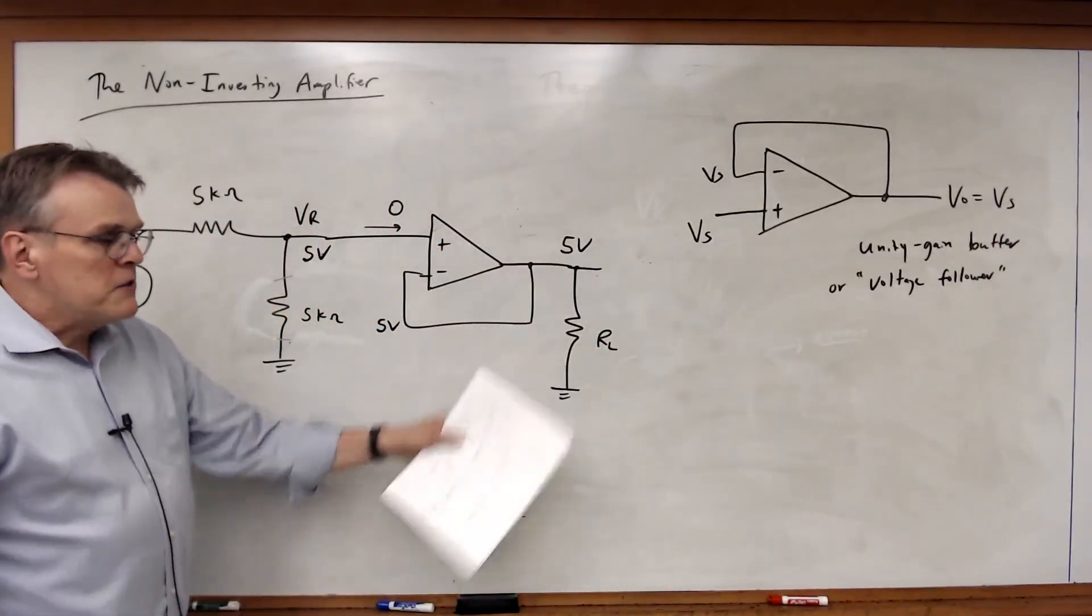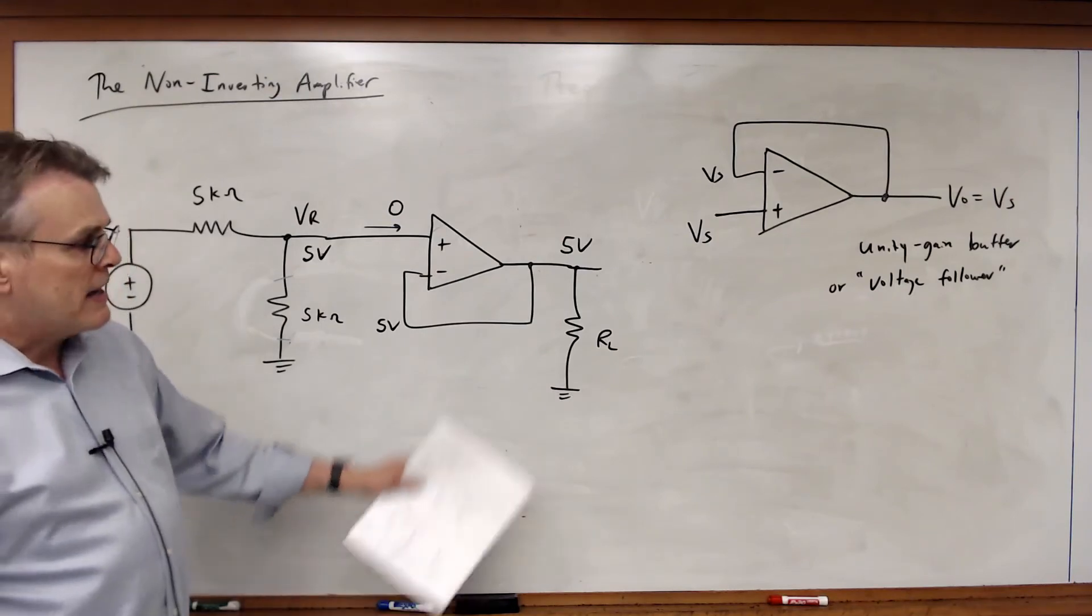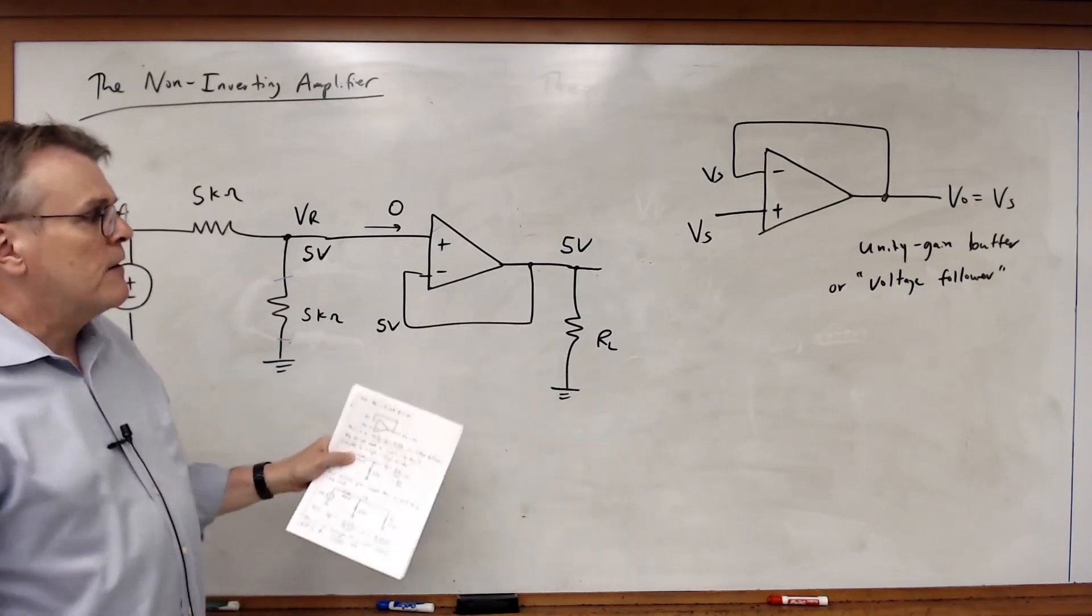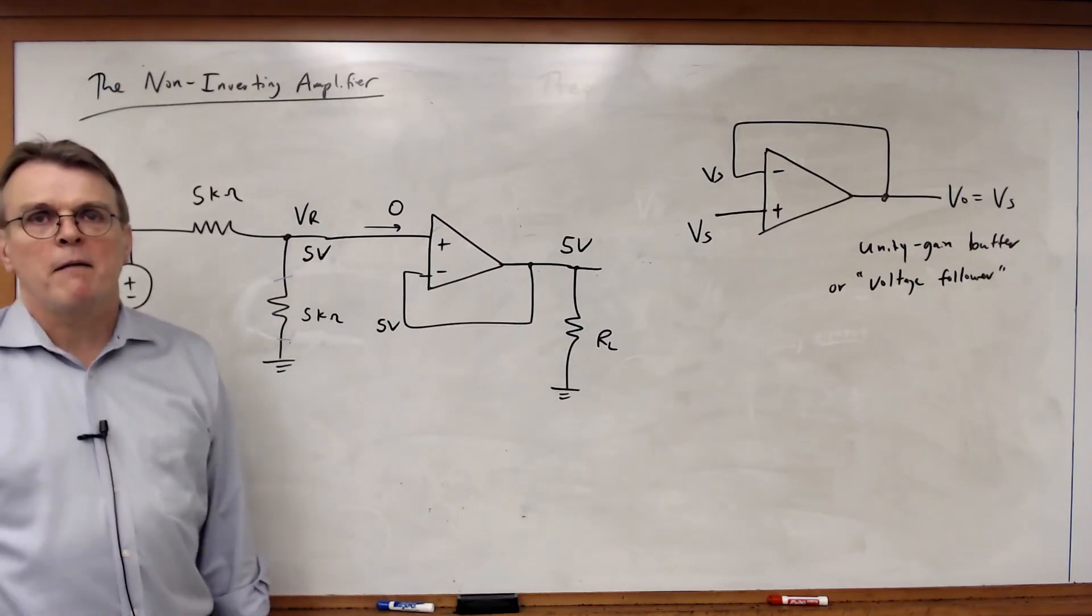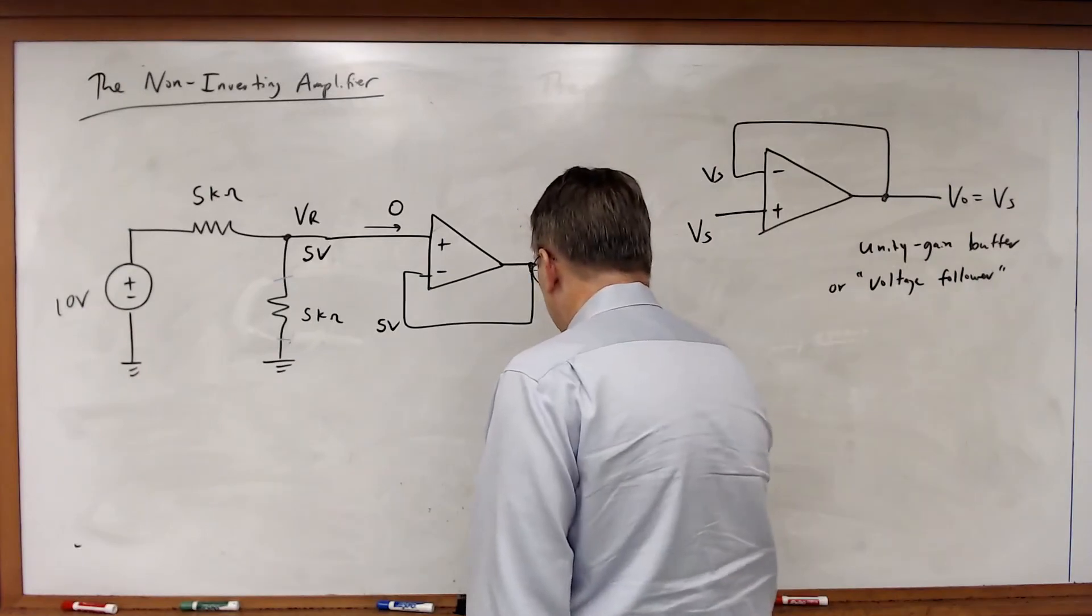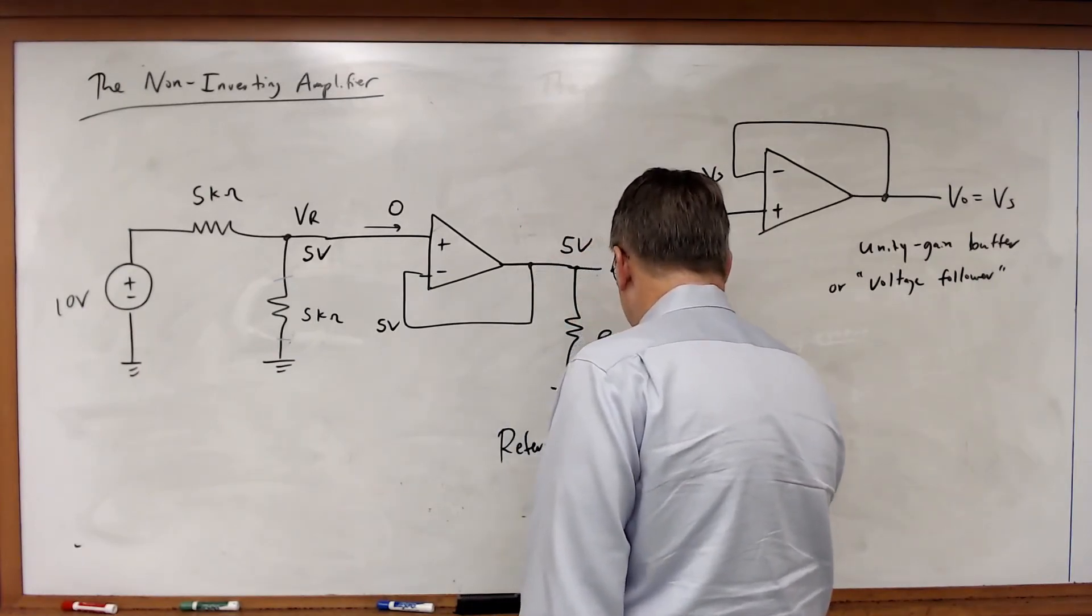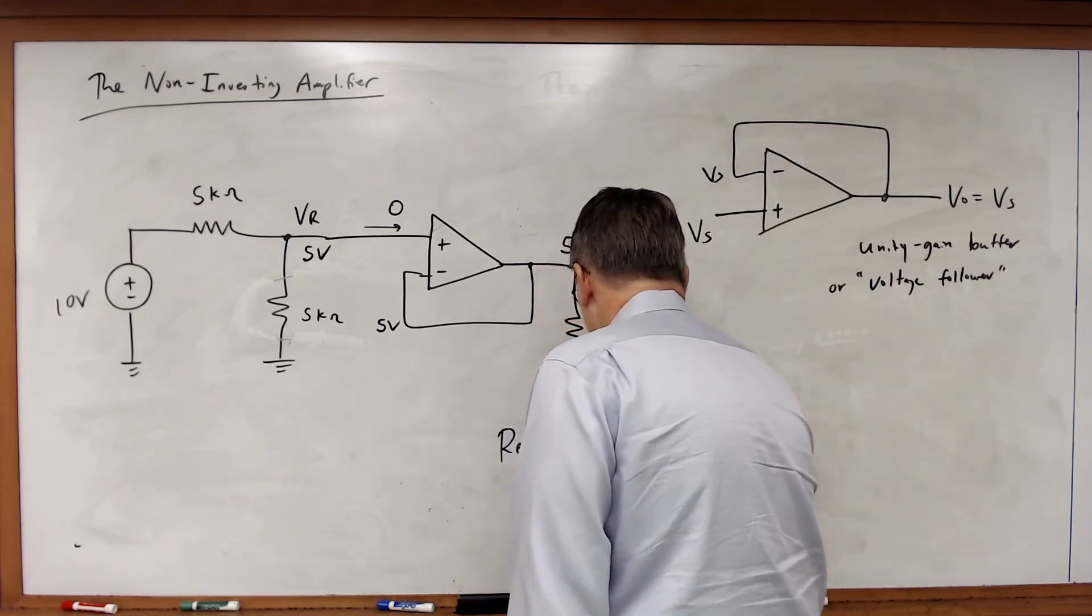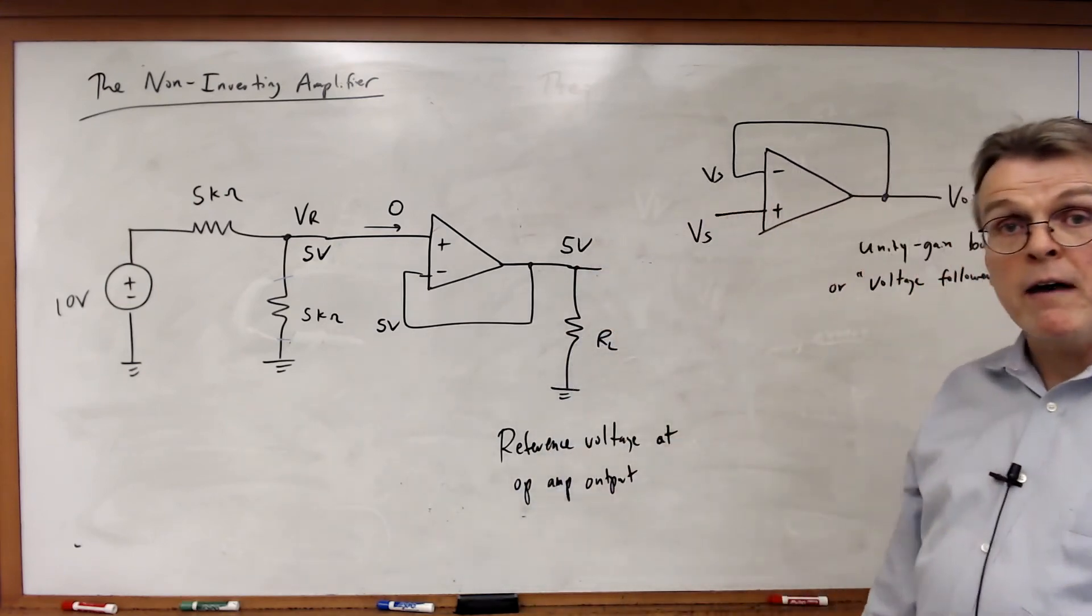And now it doesn't matter what the value of RL is. I can make this 1k, 10k, 1000k. Doesn't matter. The value of RL doesn't affect the output voltage of the op amp. And so in this case, the reference voltage at the output of the op amp is independent of the value of R sub L.